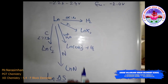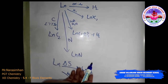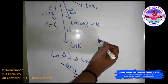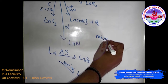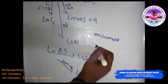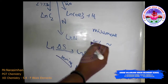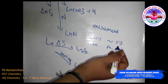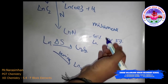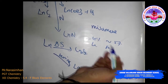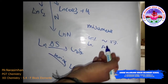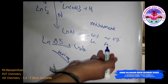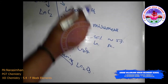Before discussing actinoids, let us look at the uses of lanthanoids. They are used in the production of alloy steels such as plates and pipes. A well-known alloy is misch metal, which consists of 95% lanthanoid metal and 5% iron, along with traces of sulfur, carbon, calcium, and aluminium. Magnesium-based alloys produced include bullets, cells, and lighter flints. Mixed oxides of lanthanoids are employed as catalysts in petroleum cracking. They are also used in television screens and for fluorescent surfaces.